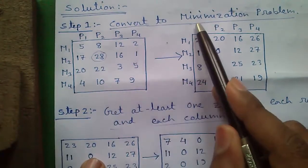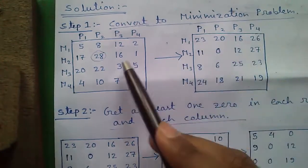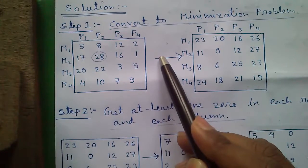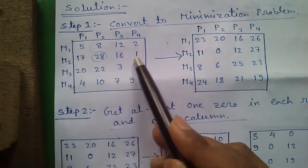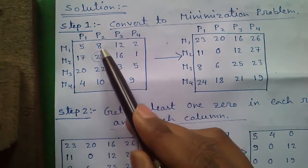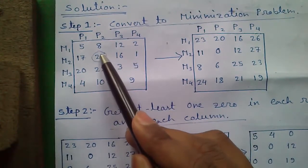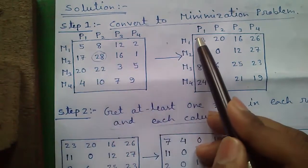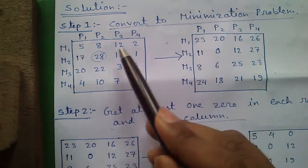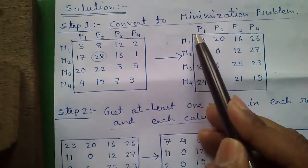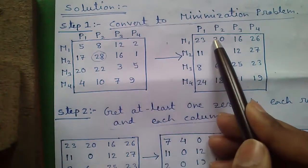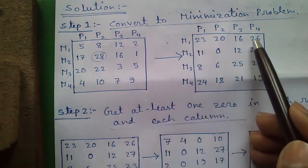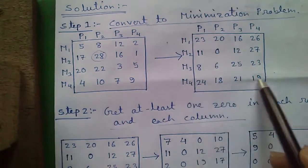Step 1: convert to maximization problem. This is the original matrix I have rewritten here. For converting to maximization problem, first search the whole matrix for the largest number. Here the largest number is 28. Subtract each number from 28 to form the minimization problem. So 28 minus 5 is 23, 28 minus 8 is 20, 28 minus 12 is 16, and 28 minus 2 is 26.